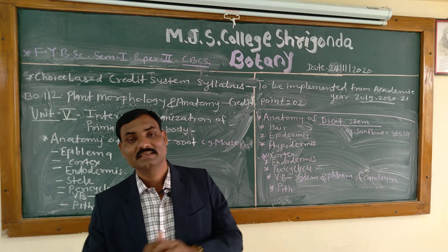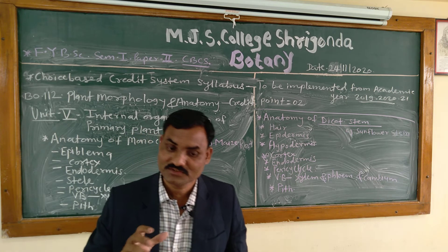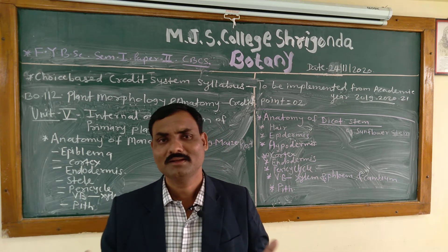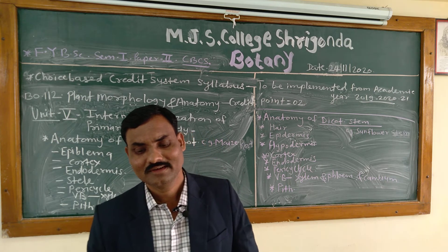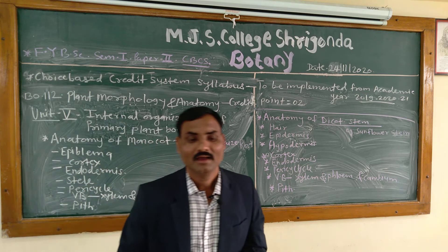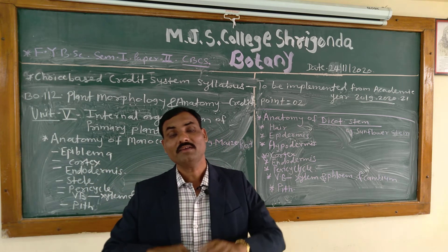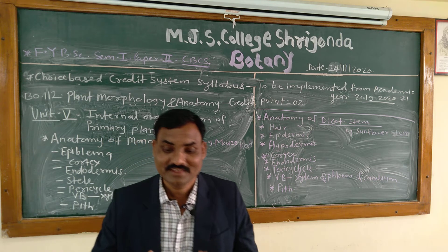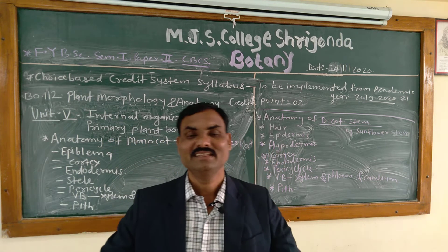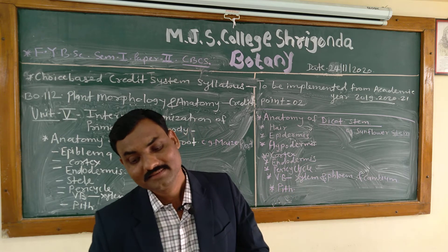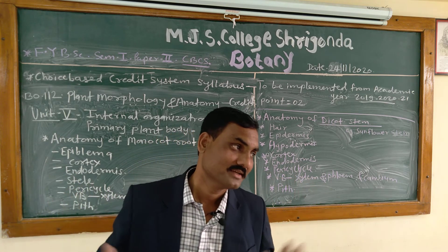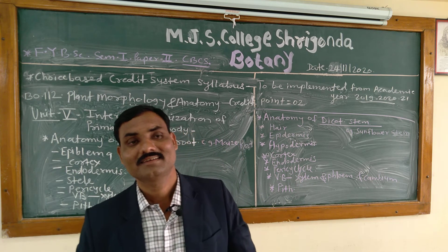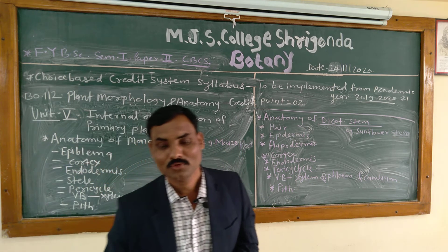Phloem lies in the form of small patches alternate to xylem in the vascular bundles. Pith occupies the central position of the stele and is composed of thin-walled parenchymatous cells containing abundant starch grains.